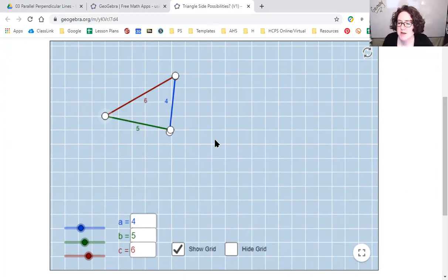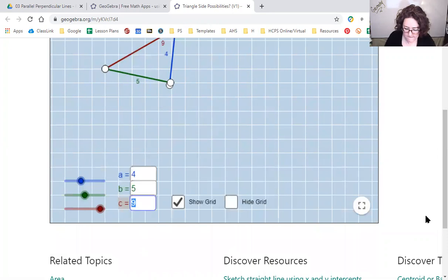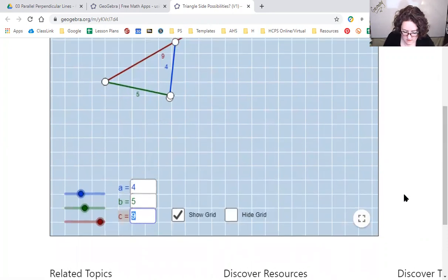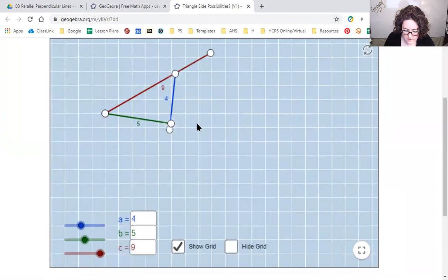Last one to check is 4, 5, and 9. Let's just change our measure for side C to 9. So what do you think? I'm going to have the same problem on this one. To get them perfectly overlapped, I've got to have a really straight line. There's no space in there, there's no actual triangle. So 4, 5, 9 doesn't work.